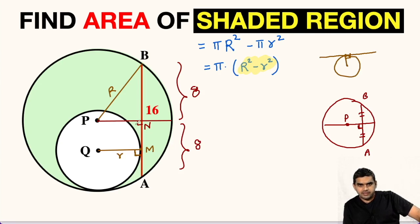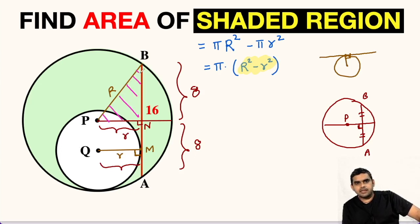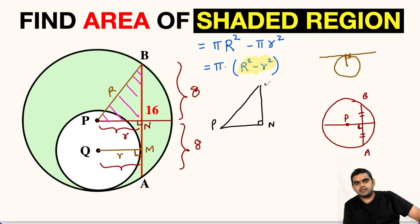By symmetry, the length PN will be equal to small r, the radius of the smaller circle. Now focus on triangle PBN. Point P, point N, and point B form a right triangle, where PB equals capital R, PN equals small r, and BN equals 8.